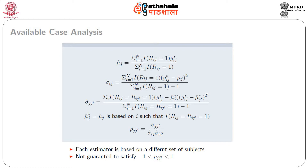For the available case analysis, we can define mu_j hat and sigma_ij hat of the same form, but this time we keep an indicator vector of r_ij equal to 1 times y_ij*. That means we are only including all those j's — including the subjects or cases where the condition n_i equal to p is satisfied. The estimator is written as mu_j hat and sigma_ij hat. But the problem is that each estimator is based on a different set of subjects, because this is dependent on the j's.